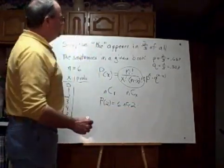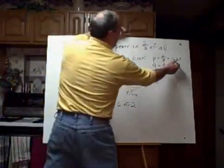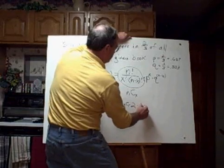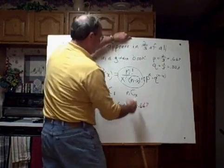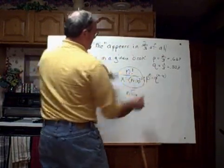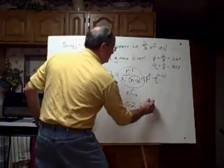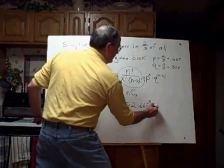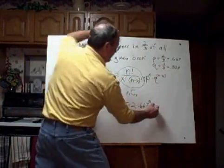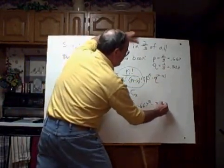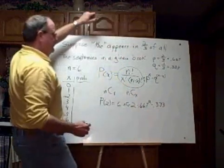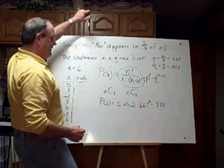Multiply times the probability of success, which as a decimal we're going to write as 0.667, raised to the power of the number of successes that we're interested in, which is two, times the probability of failure, which is 0.333...